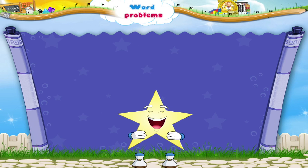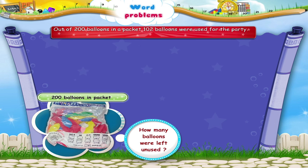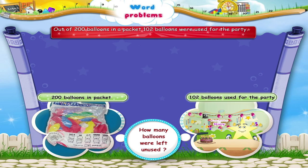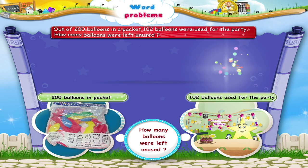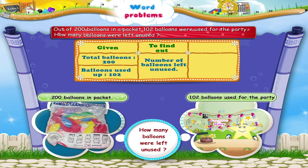Stari, you seem so excited. Let us try another one. Out of 200 balloons in a packet, 102 balloons were used for the party. How many balloons were left unused? What do we do, Stari? Good! We first write the given information. Total balloons: 200. Balloons used up: 102. We need to find out the number of balloons left unused. So, here we perform the operation of Subtraction.